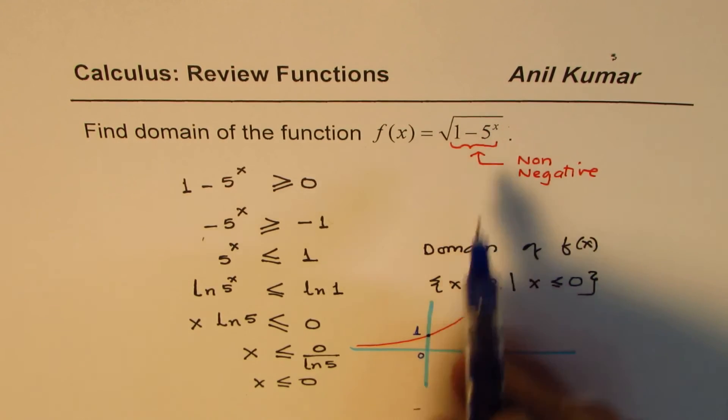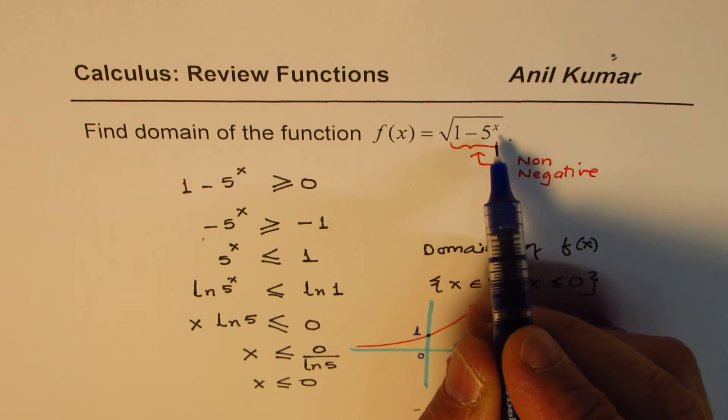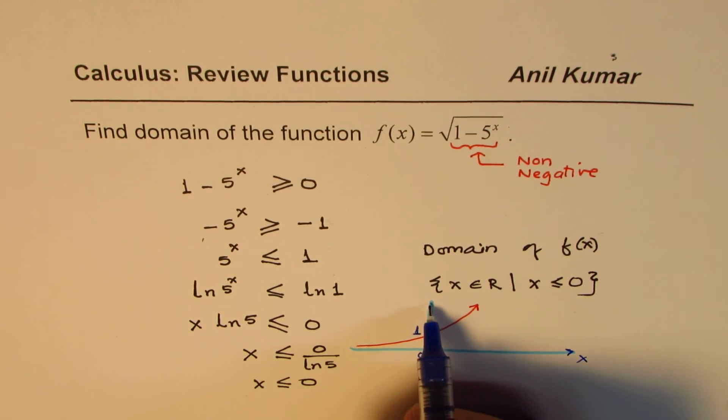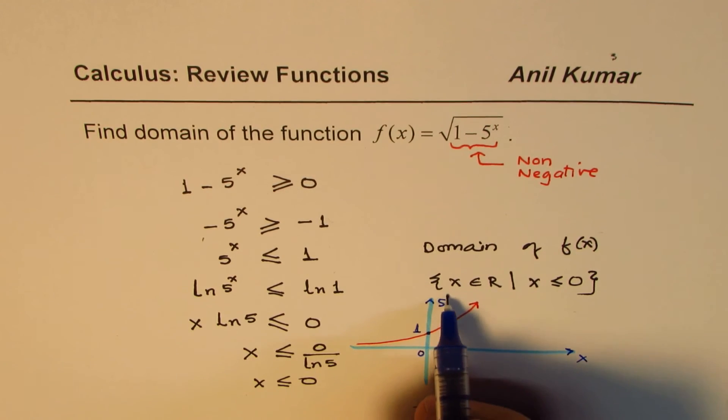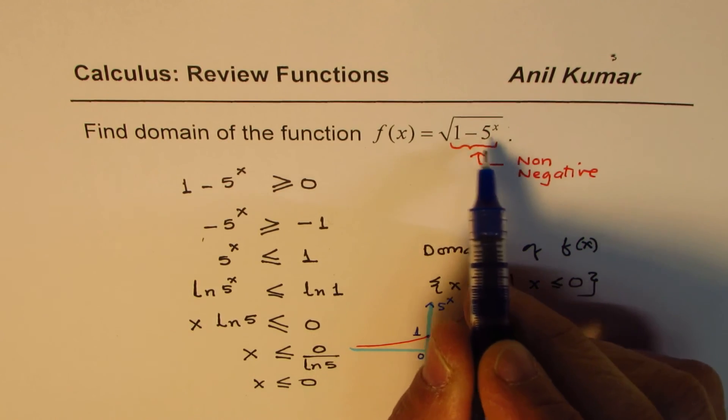So for values less than x = 0, 5^x will be less than 1. Values beyond 0 on the right side are going to be greater than 1, correct? And so therefore, from this graph also, where I'm plotting 5^x, you can make out that the value of x should be less than or equal to 0.